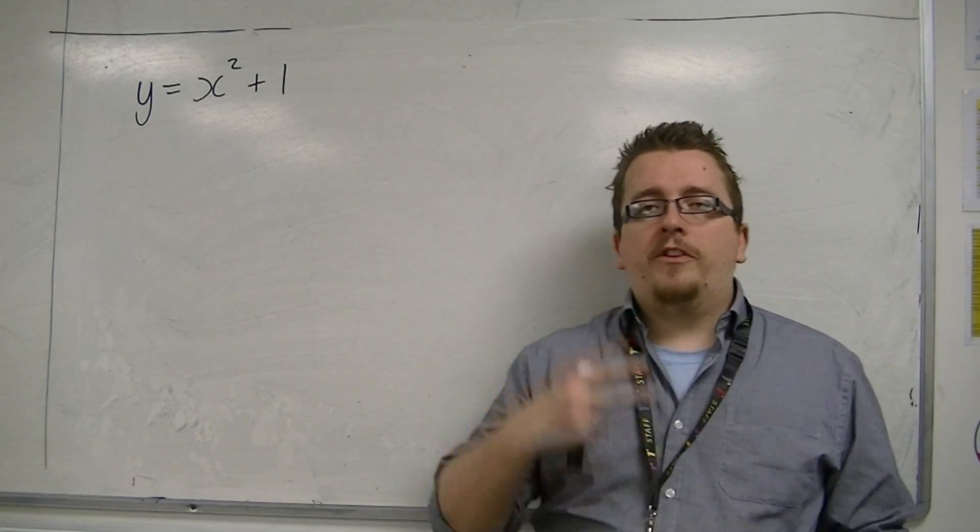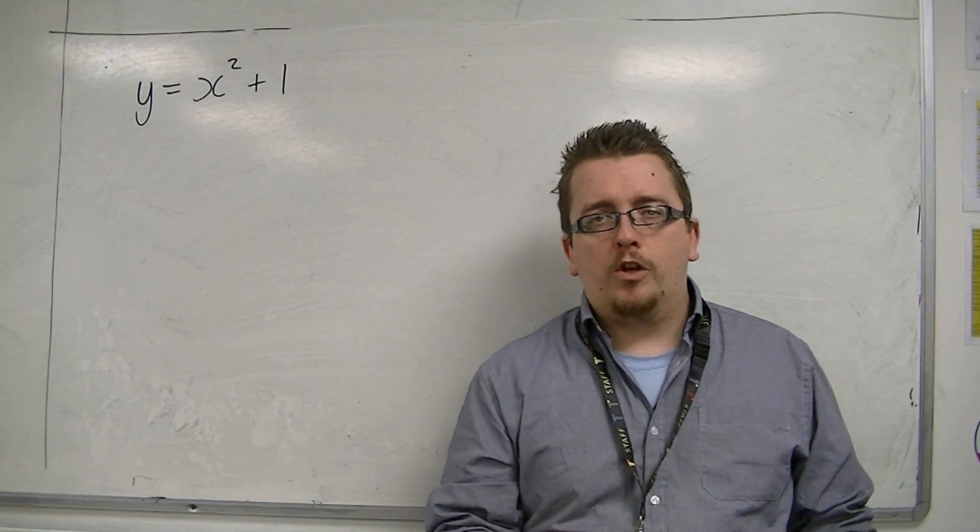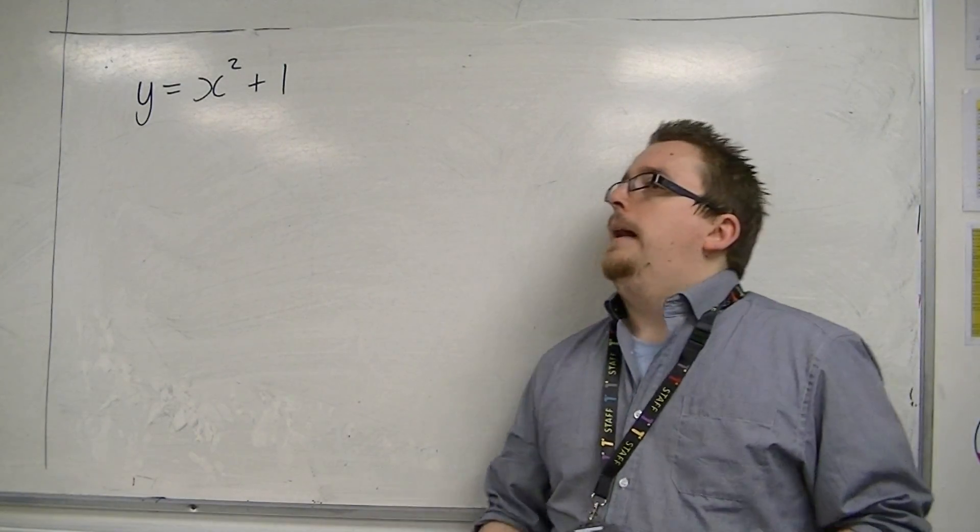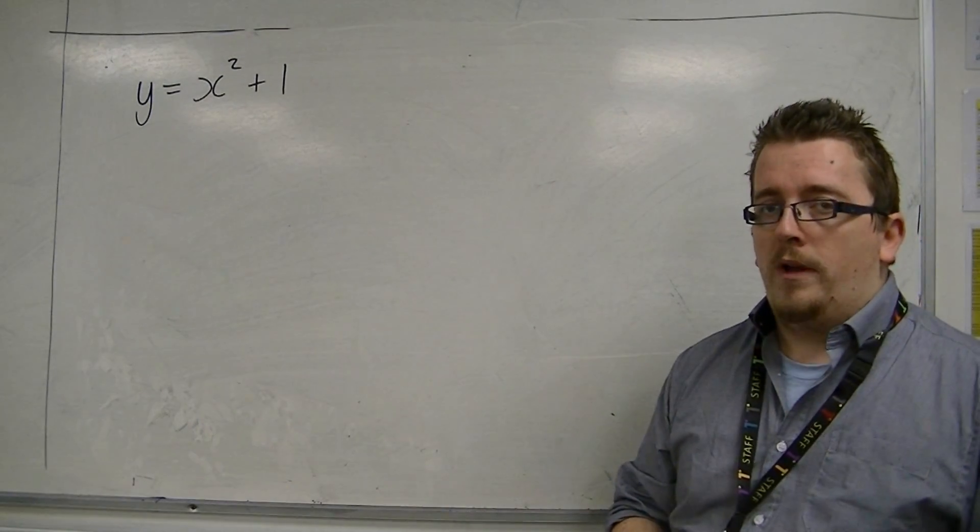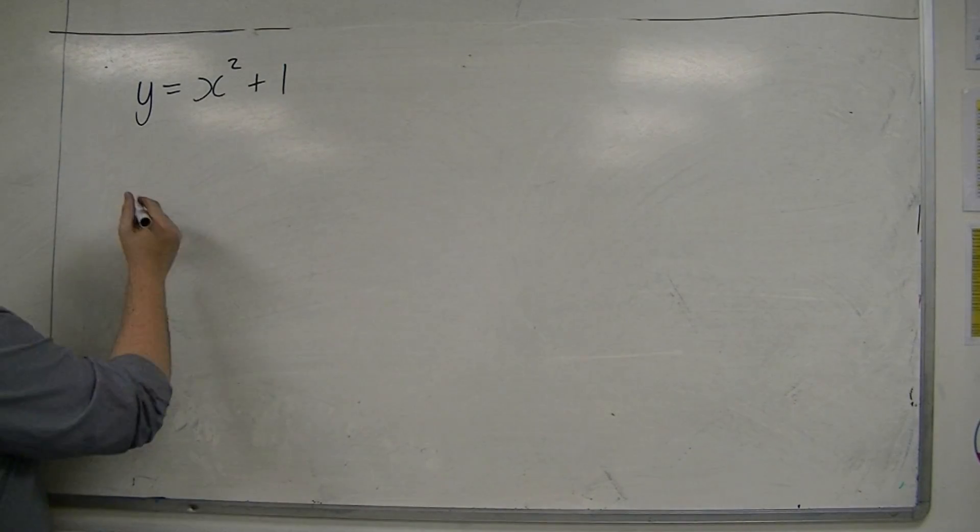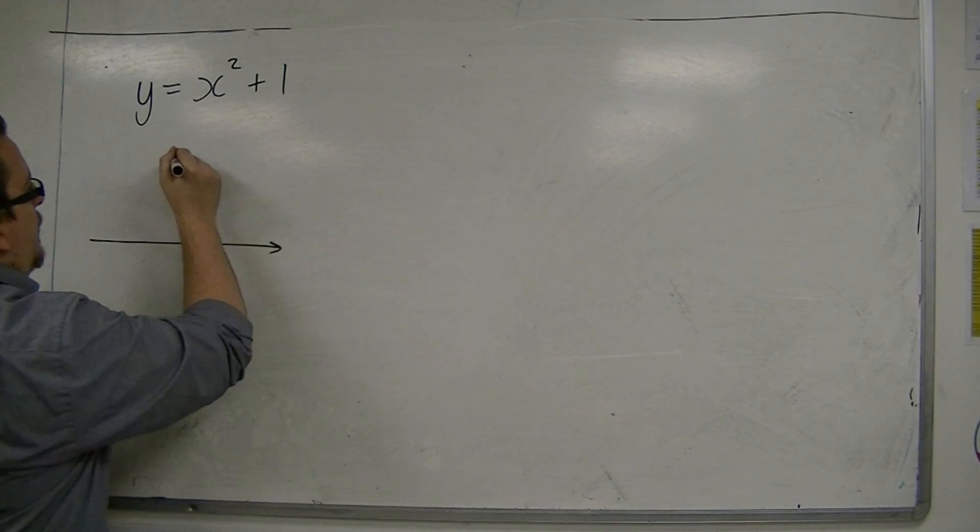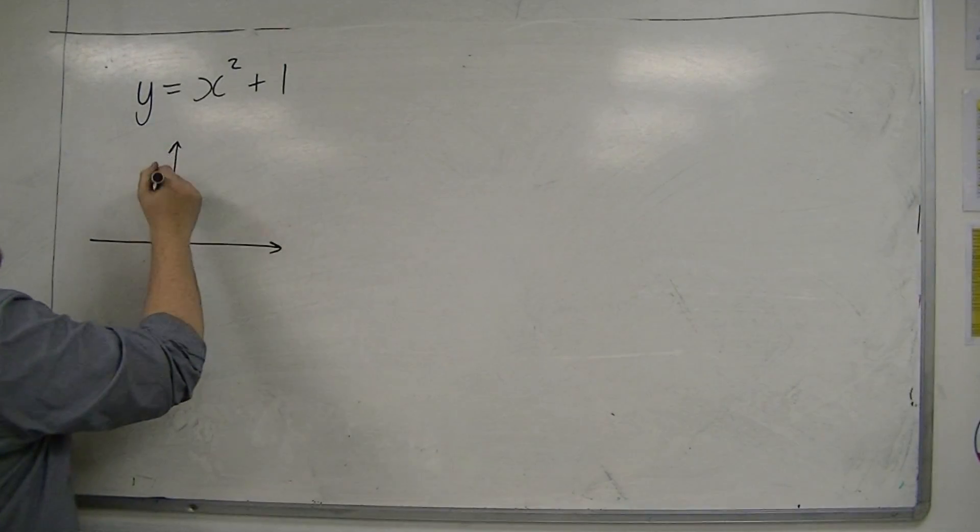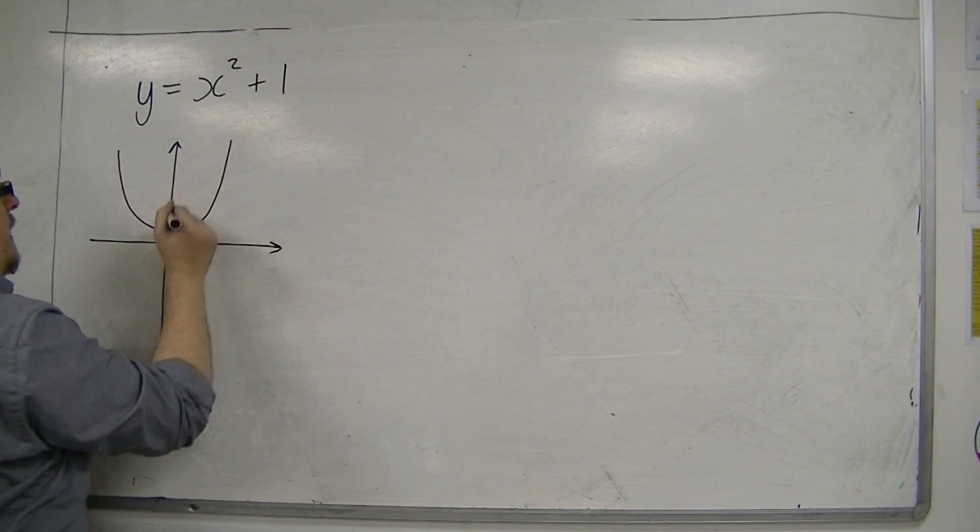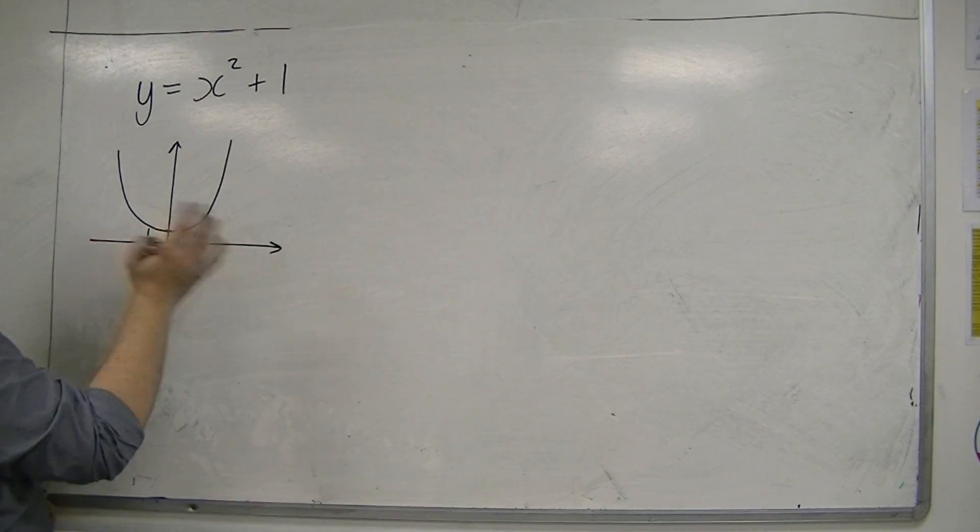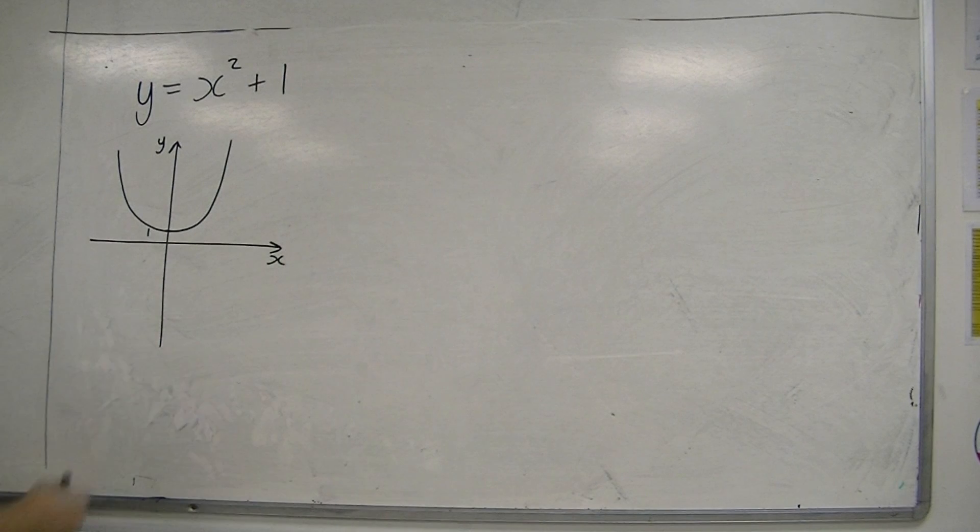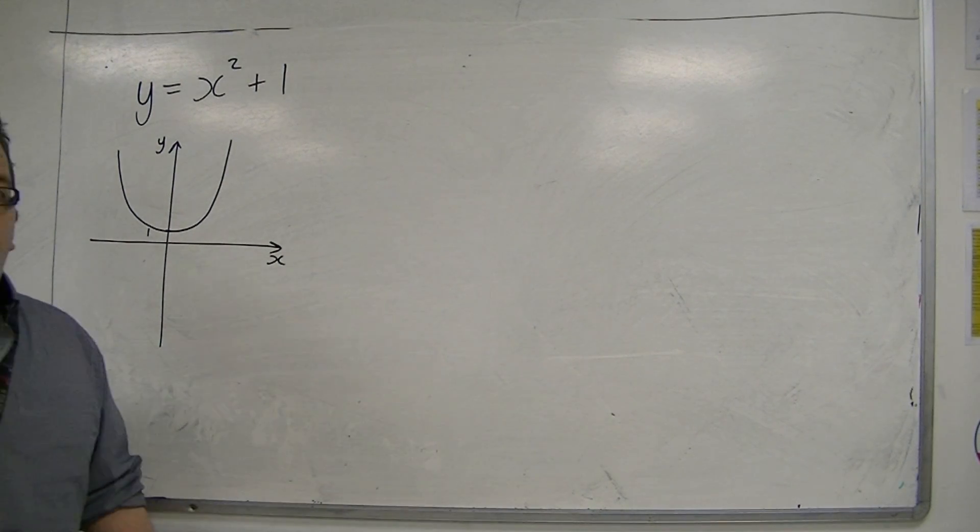I'm going to start off with a base equation from which we are going to come up with our concepts. We're going to be looking at y equals x-squared plus 1. So I'm just going to make sure we know what this graph looks like. y equals x-squared plus 1 looks like y equals x-squared, but is 1 up from the x-axis. This is what y equals x-squared plus 1 looks like.